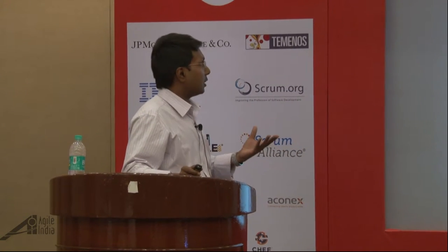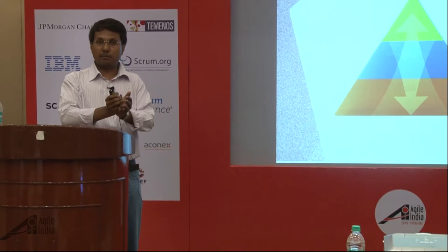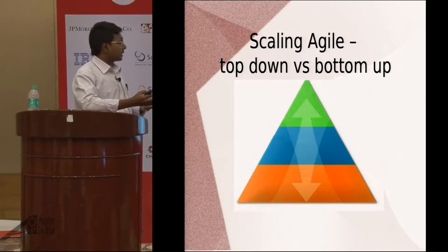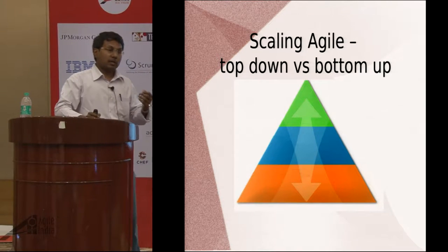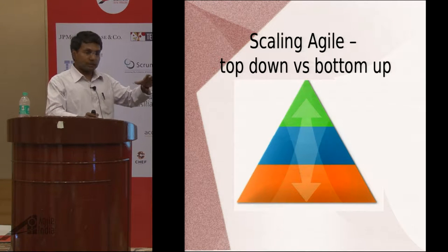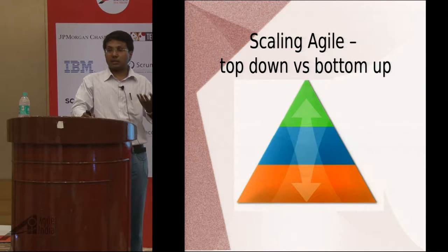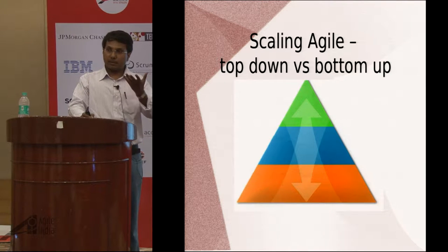In terms of scaling agile, you can either do a top-down approach or a bottom-up approach. If you are a small startup, you start with a small team and then expand, creating more teams — that's scaling agile bottom-up. Whereas if you are an existing company wanting to implement agile, you can do top-down with a directive from top management. In the case of the Spotify model, they started with a small team and then expanded.